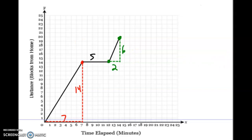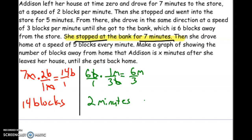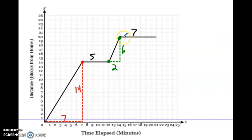Next, she stopped at the bank for seven minutes. So on the graph, we stop and count seven minutes this way — another flat horizontal line.